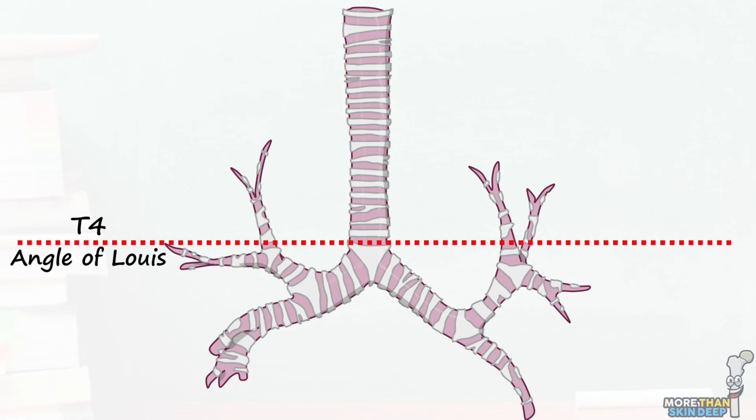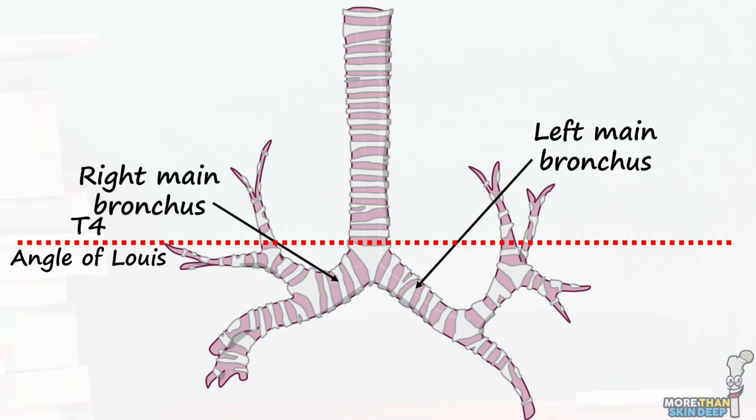At the level of the T4-T5 intervertebral disc, approximately the angle of Louis, the trachea bifurcates into the left and right main bronchi. The point at which this happens is known as the carina.